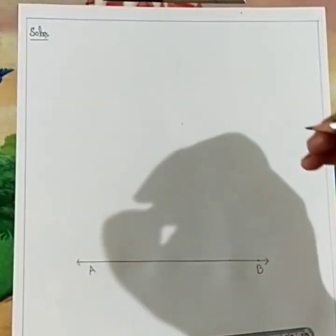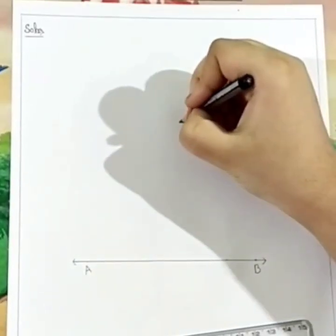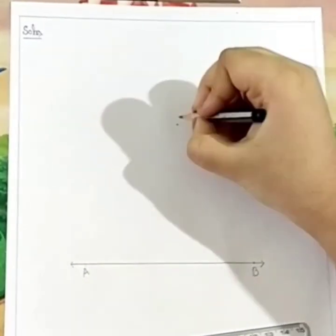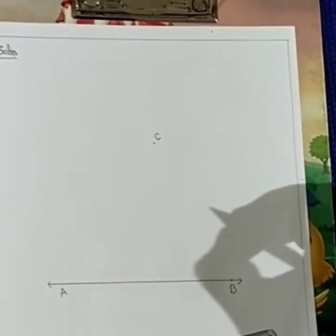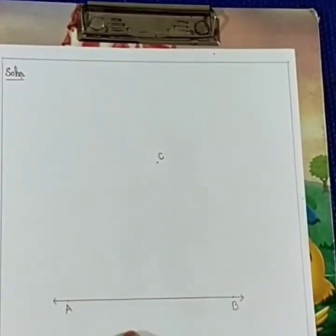Now, we have to take a point C outside this line. So, I will take the point here and name it as C. Through C, we have to draw a parallel line which is parallel to AB.